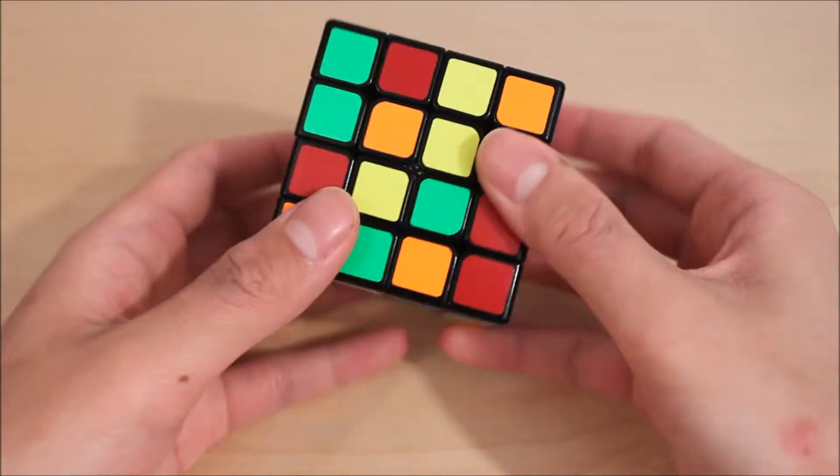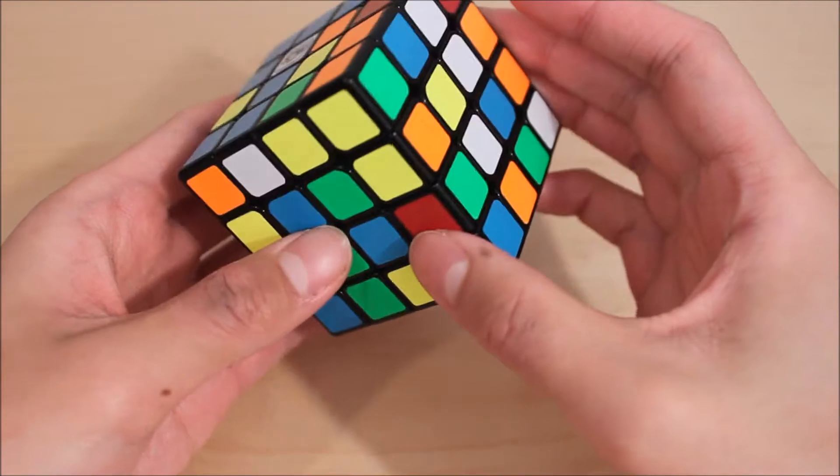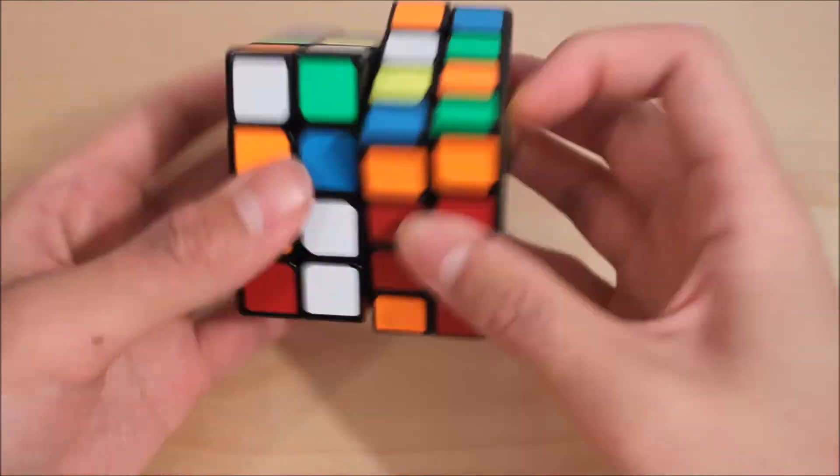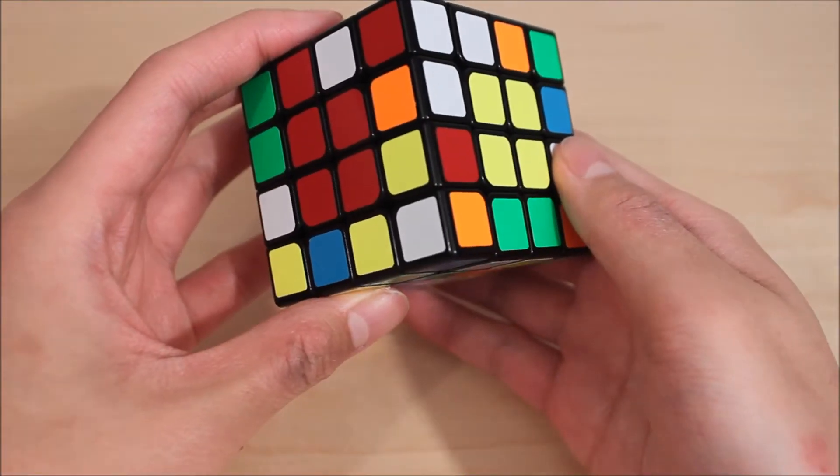The first method is just to solve the cube normally, and keep track of the parity state of the cube, and somehow get it into an even parity state once two adjacent centers are solved. While this is the most efficient, it takes much more thinking than the other two methods.